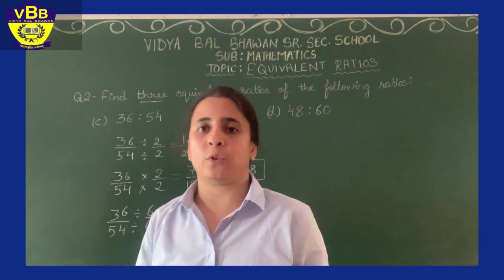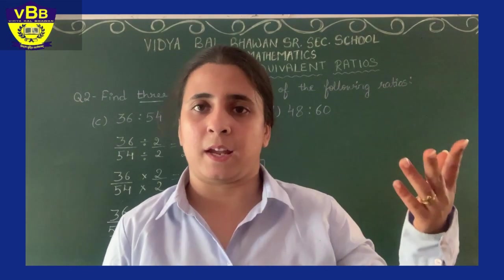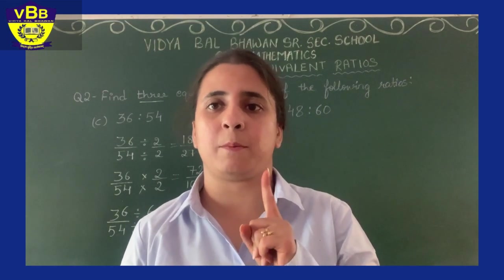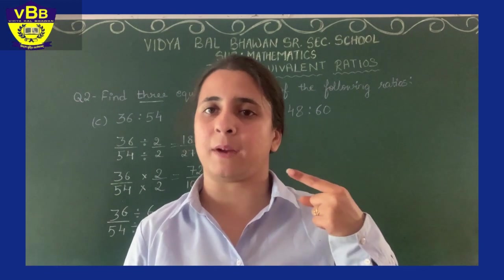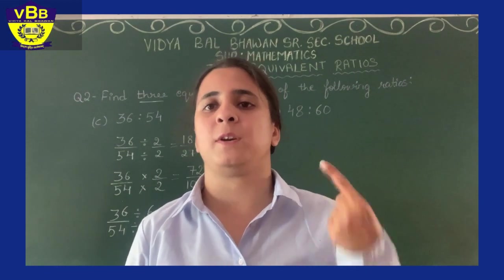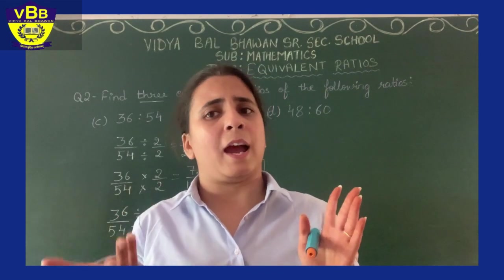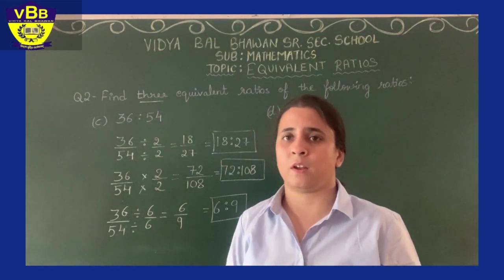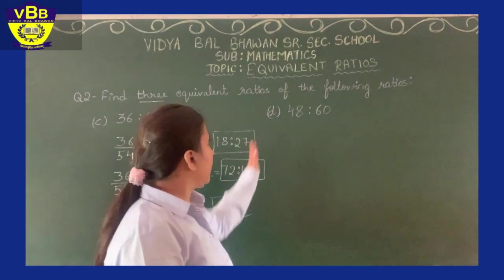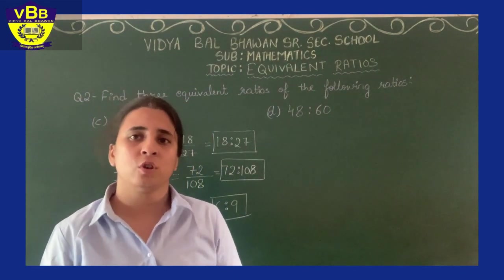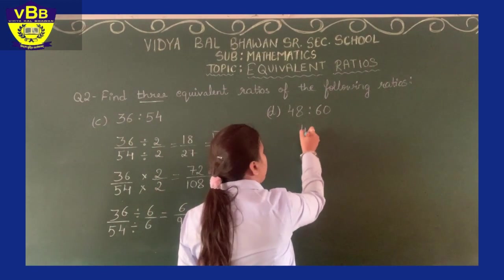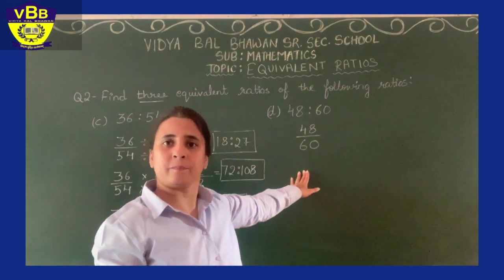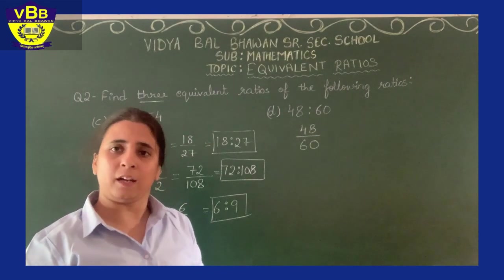You can either multiply or divide to find equivalent ratios. Just keep in mind that if you are multiplying, both numerator and denominator must be multiplied by the same number; if dividing, both must be divided by the same number. Now let us look at part D: 48 is to 60, written in fractional form as 48 upon 60.